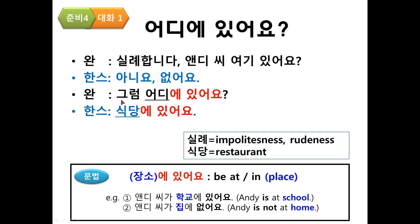He said, 그럼 어디에 있어요? 그럼 means then. And 어디에 있어요? 어디 is where. So, then where is he? Han said, 식당에 있어요. 식당 is restaurant or cafeteria. So, he is at the cafeteria.